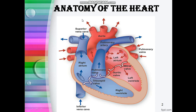Let me do a recap. First, blood enters the right atrium through the superior and inferior vena cava — this is impure or deoxygenated blood. From the right atrium, blood enters the right ventricle through the open tricuspid valve. Then blood flows through the pulmonary valve and pulmonary artery to the lungs, where it gets purified. This purified blood enters through the pulmonary veins to the left atrium, then into the left ventricle through the mitral valve, and finally through the aortic valve and aorta to the body.